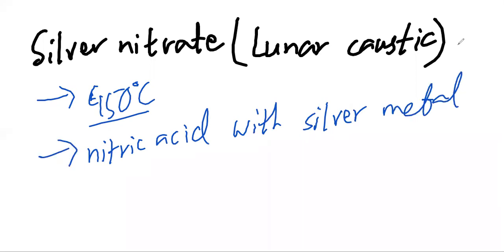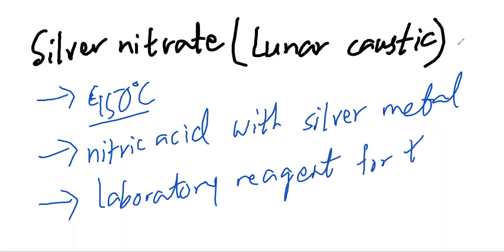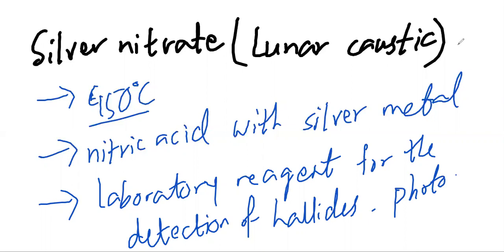At 450 degrees centigrade temperature, silver and nitrogen dioxide are deposited. It's used as a laboratory reagent for detection of halides. Also used in photography and medicines, and for removing hair growth from skin.